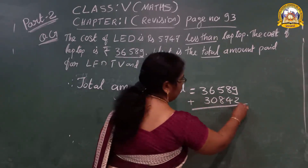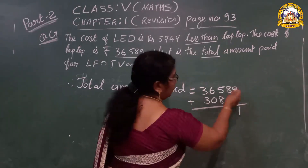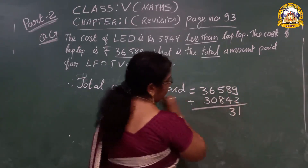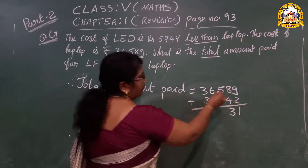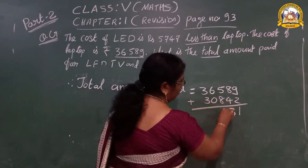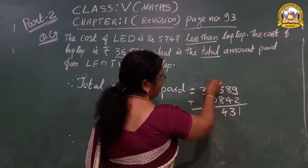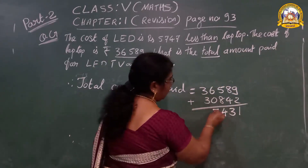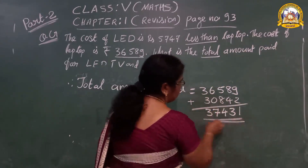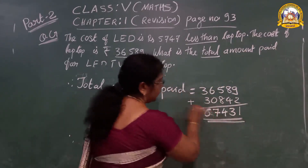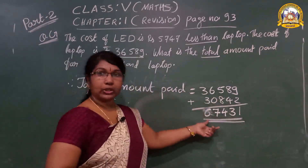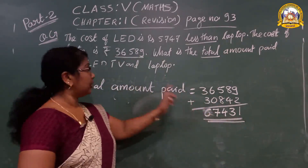Total means both we have to add. 9 plus 2 = 11. 8 plus 4 = 12, plus 1 = 13. 5 plus 8 = 13, plus 1 = 14, carry 1. 6 plus 1 = 7. 3 plus 3 = 6. This is the total amount they paid.